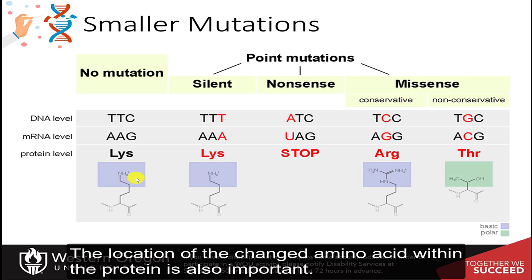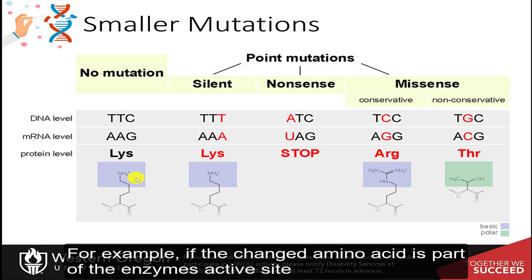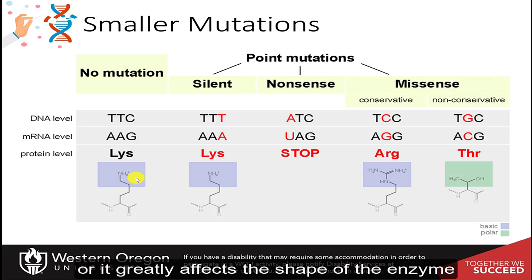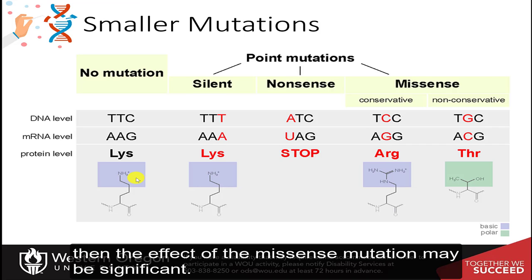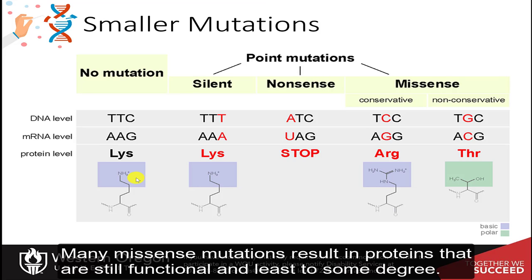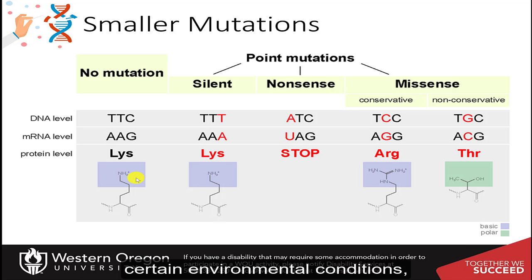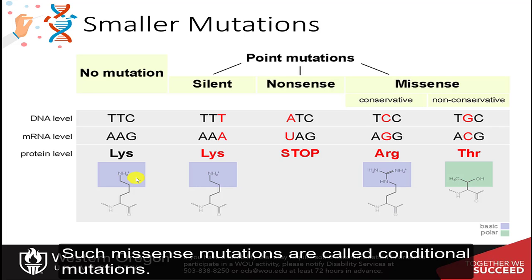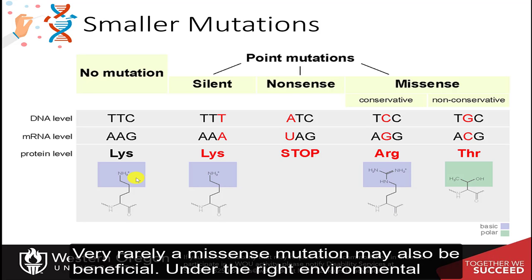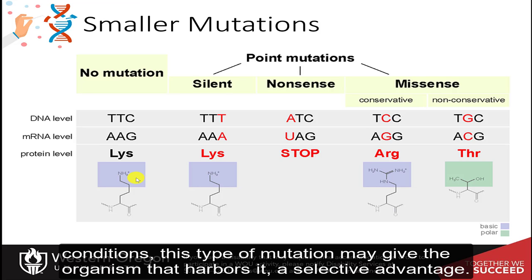The location of the changed amino acid within the protein is also important. For example, if the changed amino acid is part of the enzyme's active site, or it greatly affects the shape of the enzyme, then the effect of the missense mutation may be significant. Many missense mutations result in proteins that are still functional, at least to some degree. Sometimes the effect of missense mutations may only be apparent under certain environmental conditions — such missense mutations are called conditional mutations. Very rarely, a missense mutation may also be beneficial, giving the organism a selective advantage under the right environmental conditions.